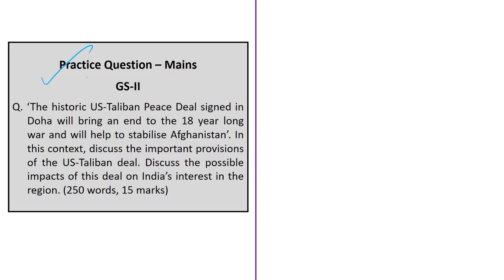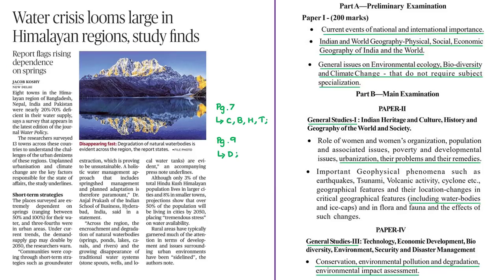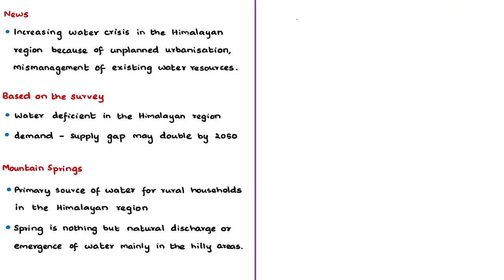The next discussion is about the increasing water crisis in the Himalayan region. This news article is based on a survey conducted in eight towns in the Himalayan region of Bangladesh, Nepal, India, and Pakistan. Researchers also surveyed about 13 towns across these countries to understand the challenges of urban inhabitants in this region.